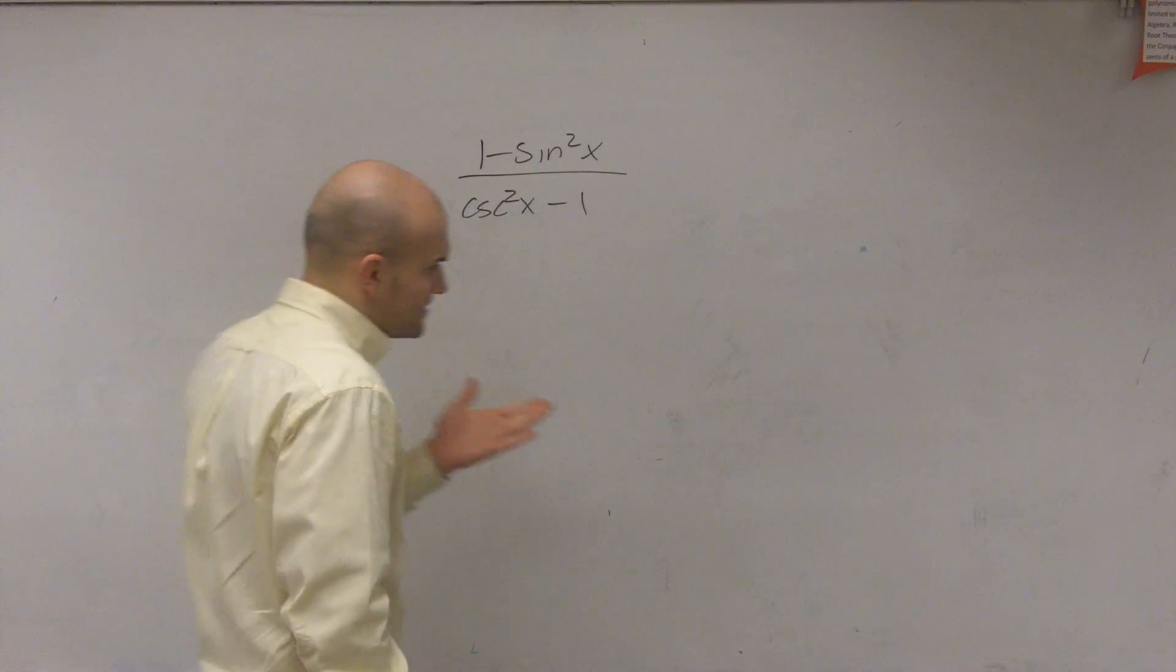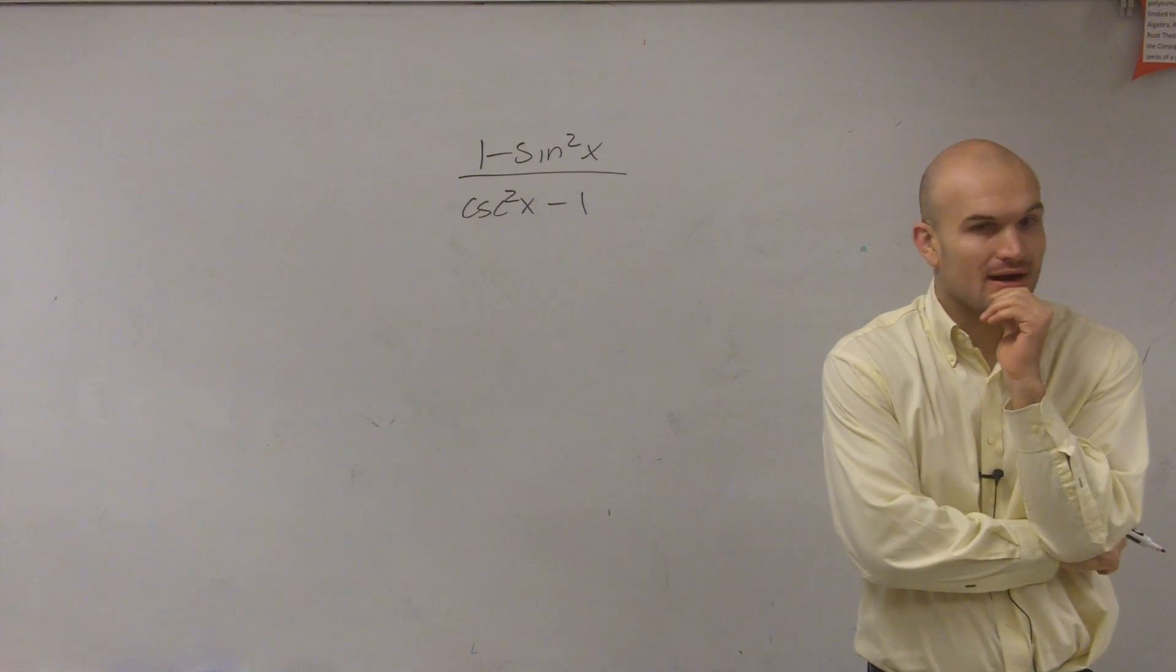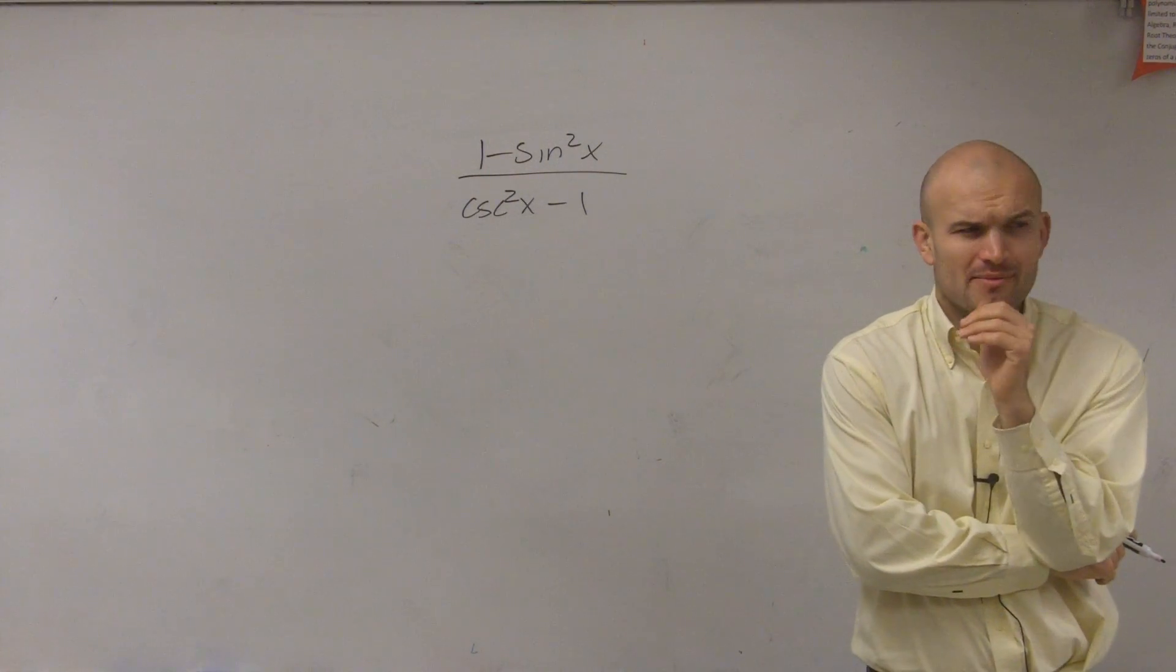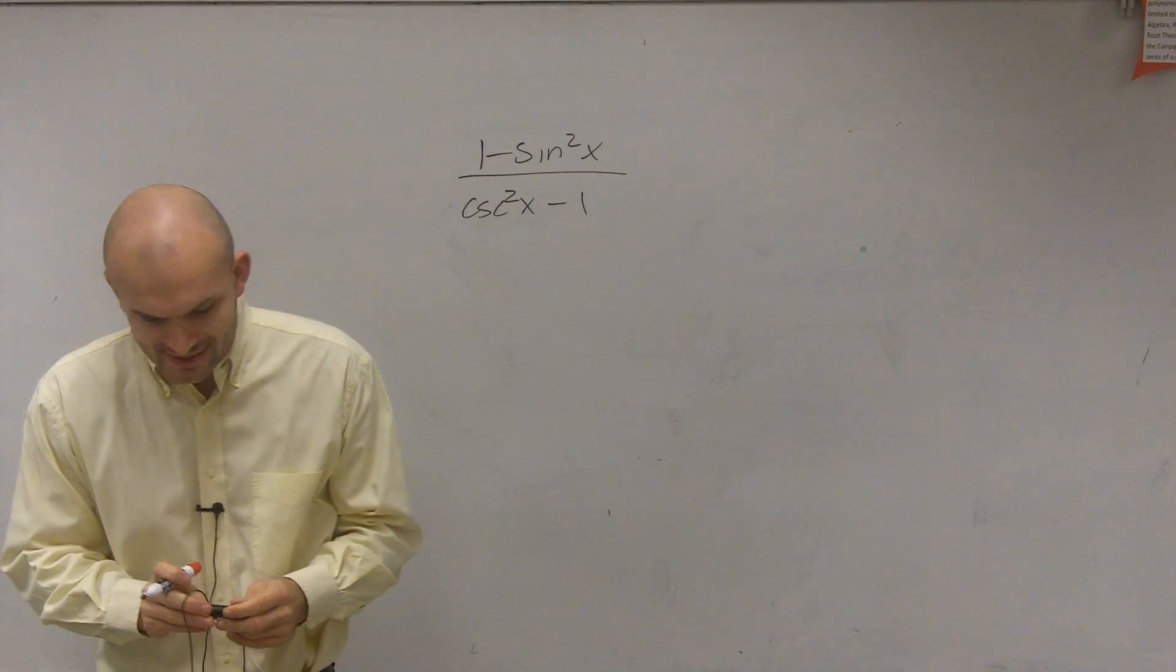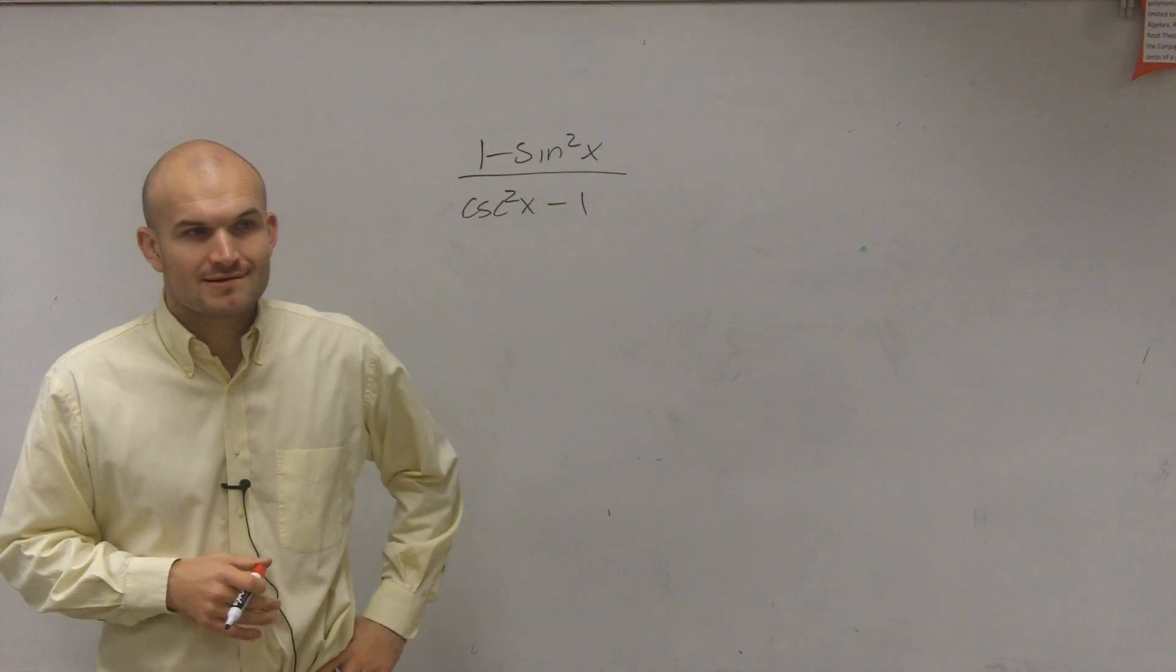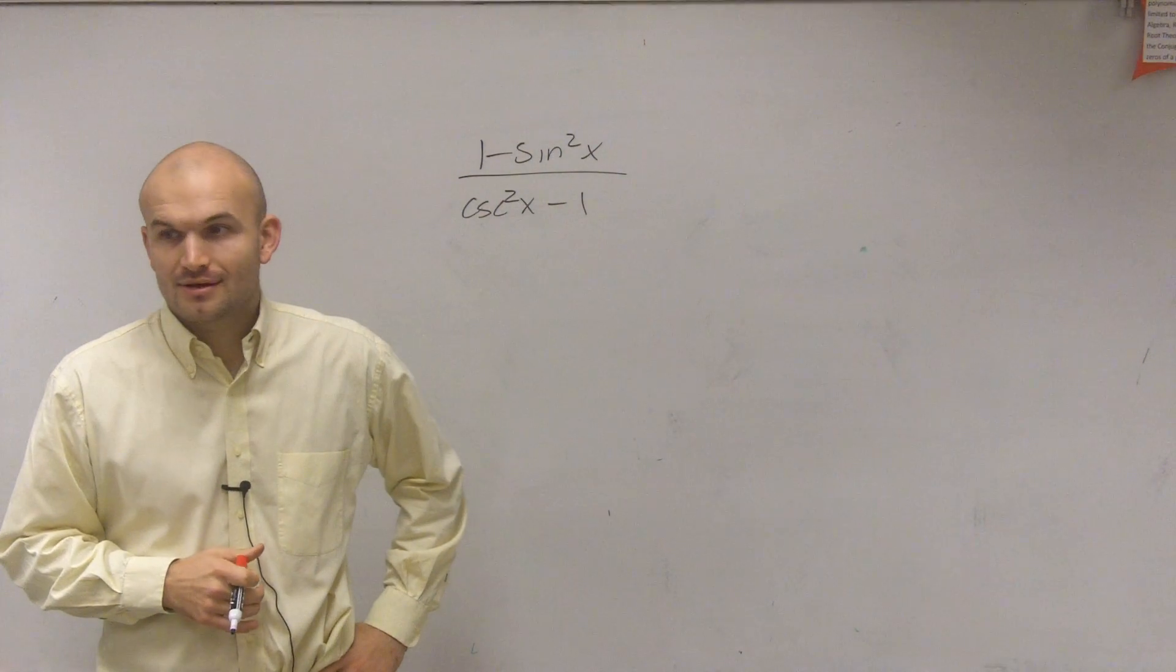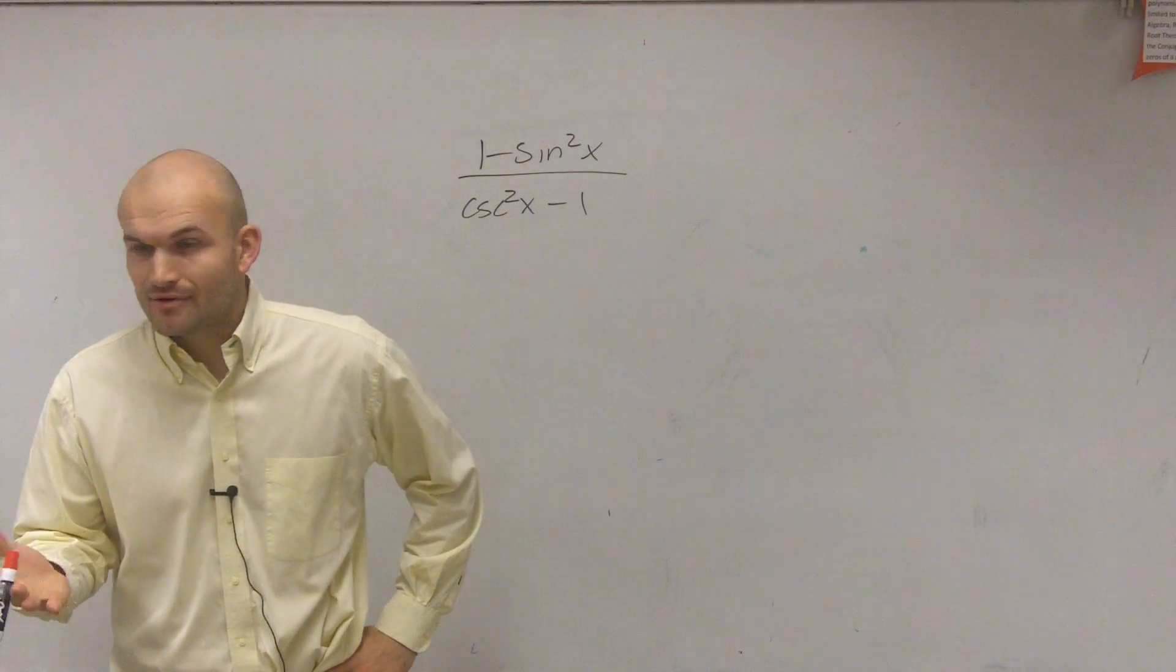Alright, so before I started doing this without talking, does anybody remember what I said for you to look for whenever you see a trigonometric function squared? The what? Pythagorean identities, right?